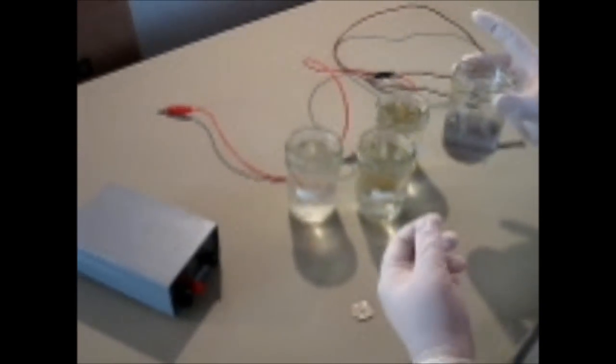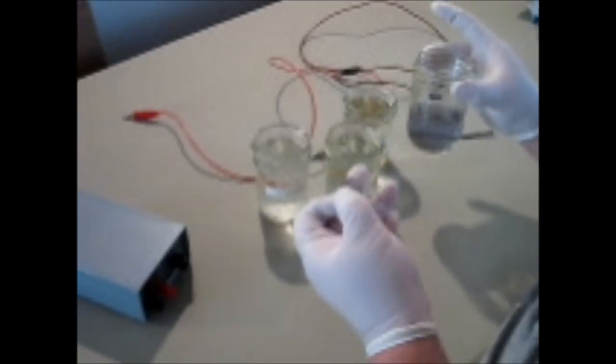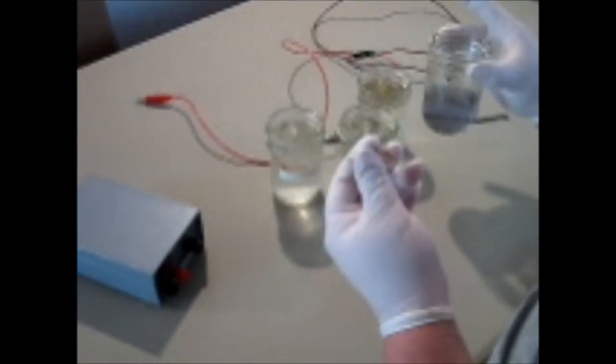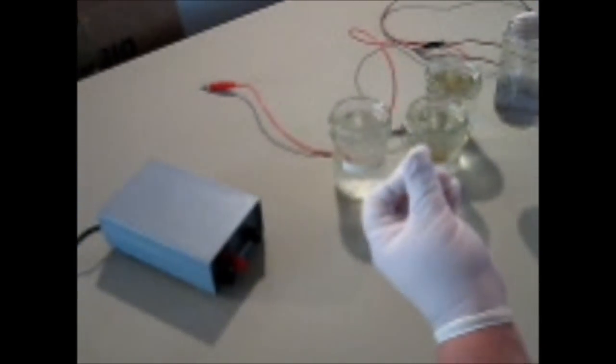What's going to happen here is with the electrical current, there's going to be a chemical reaction which is going to molecularly pull the gold out of the solution and onto the quarter. This is done on a molecular level. So when done right, once this is finished, that gold will not come off and will be bonded to the quarter.